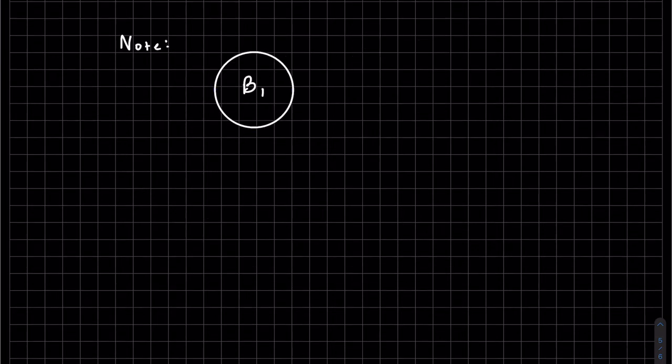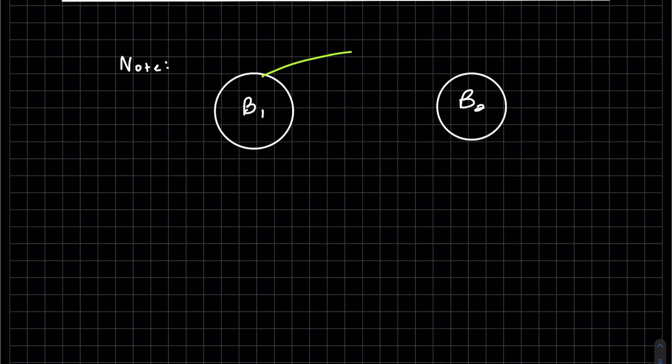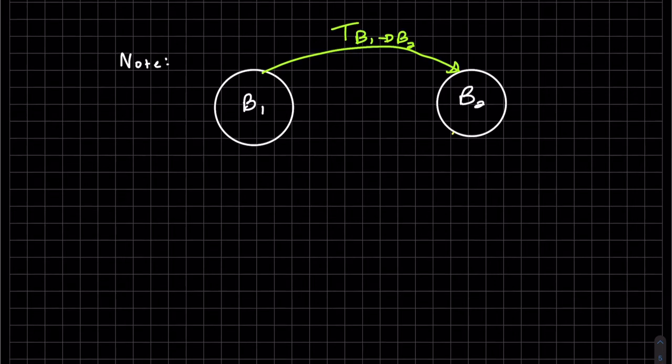So one last note. We have B1 and B2 and we have a transformation matrix from B1 to B2. We can also, of course, find a transformation matrix going the other way around from B2 to B1. And what you'll find is that the two transformation matrices are inverses of each other.